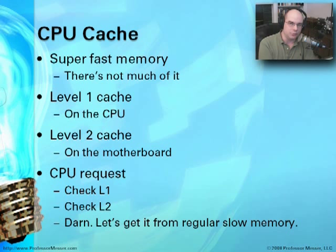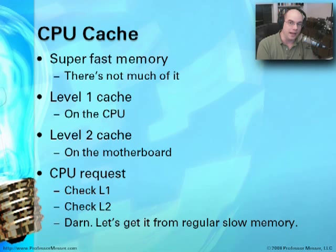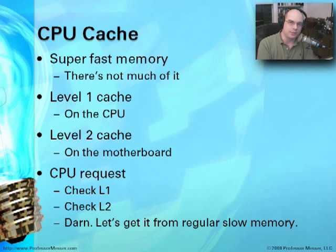Regular RAM is much slower than cache, so the larger the cache we have, the more we can store copies of what's in regular RAM and the more efficient the CPU becomes. When you're acquiring new technology — buying a new computer or laptop — look at the processor specifications. They will tell you exactly how much Level 1 cache and how much Level 2 cache is on that central processing unit.